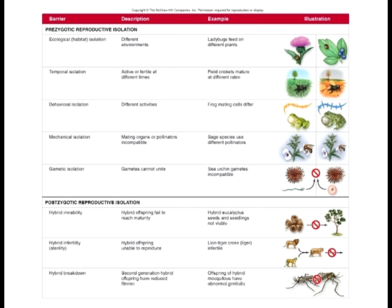Hybrid viability — the first postzygotic barrier — occurs when the hybrid zygote will not fully mature. Sometimes seeds form but will not germinate. In fact, most seeds you buy in the store today are hybrids genetically modified so they will not produce viable seeds. Hybrid inviability: you create the zygote, it starts developing, but it doesn't come to full sexual maturity — it's either not born or doesn't reach sexual maturity.